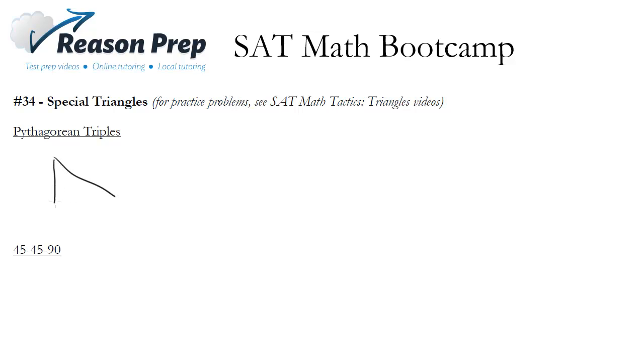For instance, the major one that comes up quite often in the SAT is the 3-4-5 right triangle. And again, these can be increased to any multiple of these regular ones. So I could have the 6-8-10, I could have the 9-12-15, and so on.